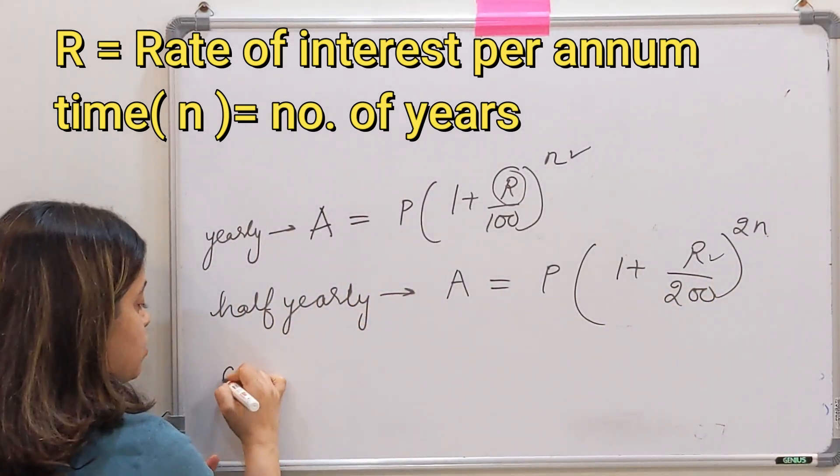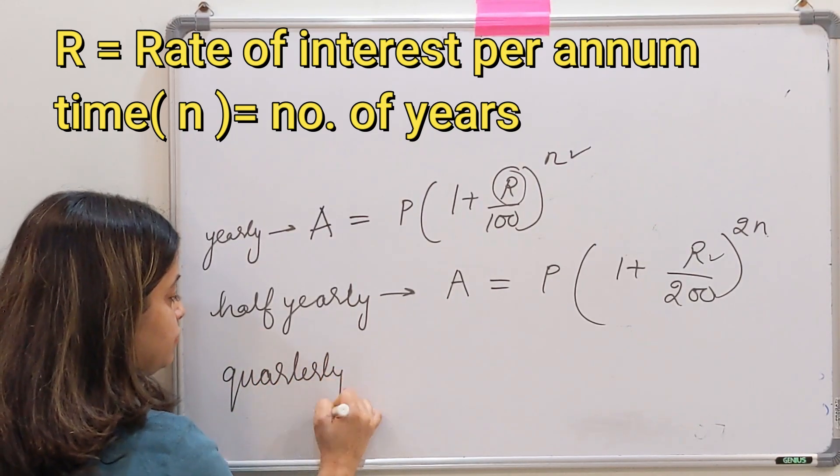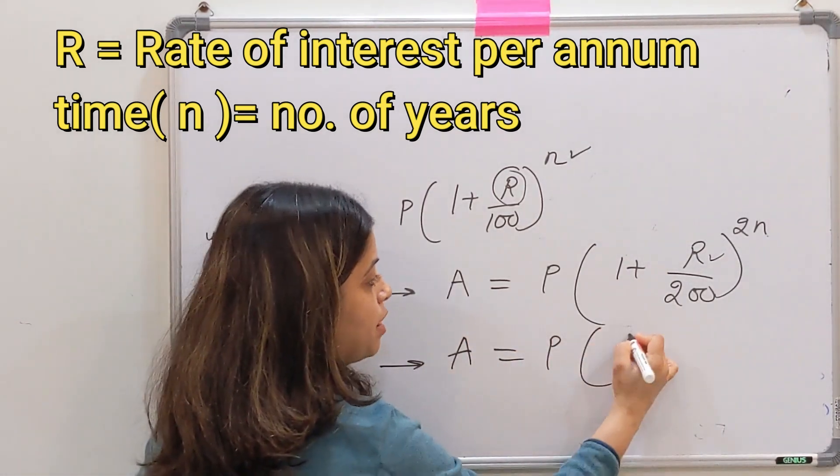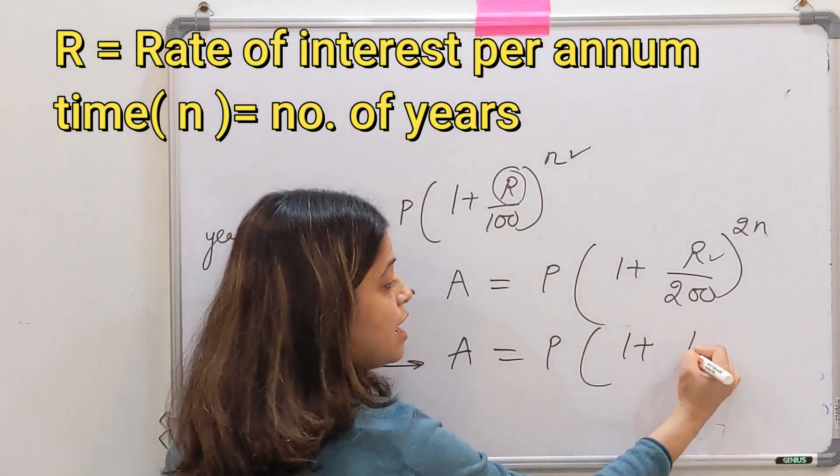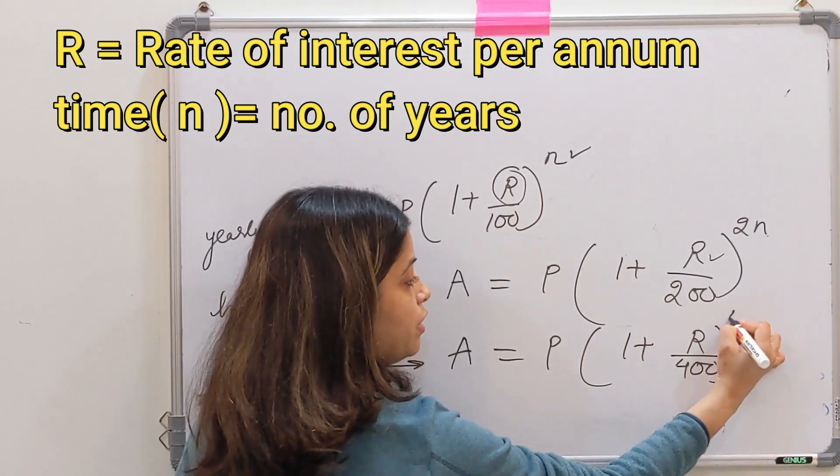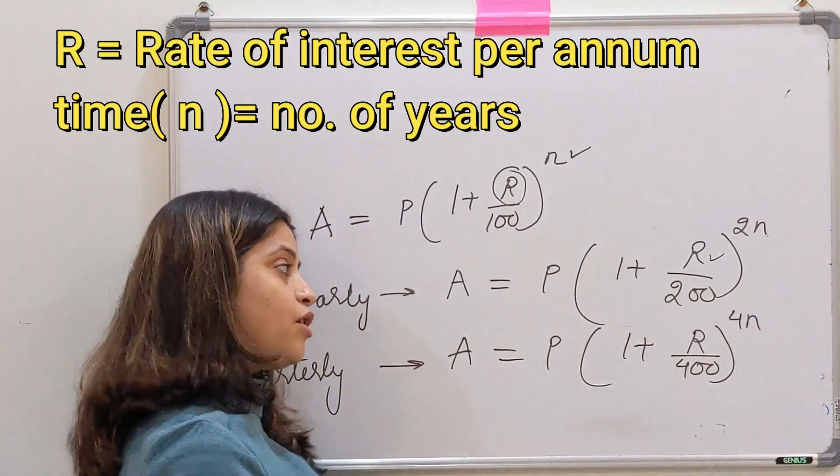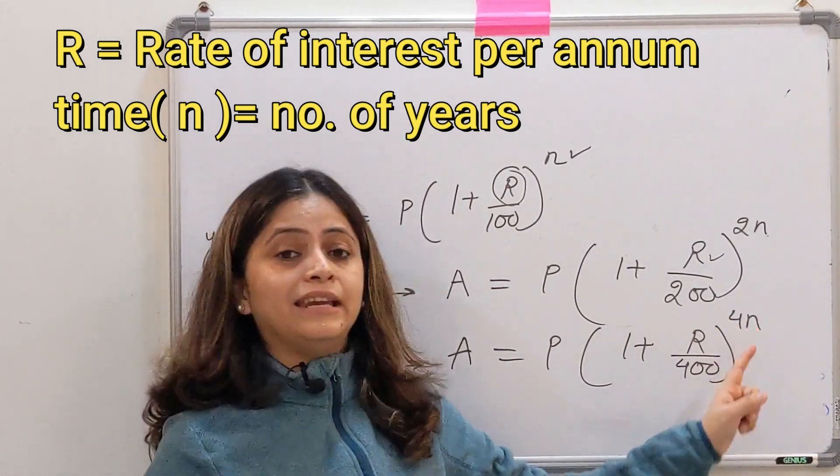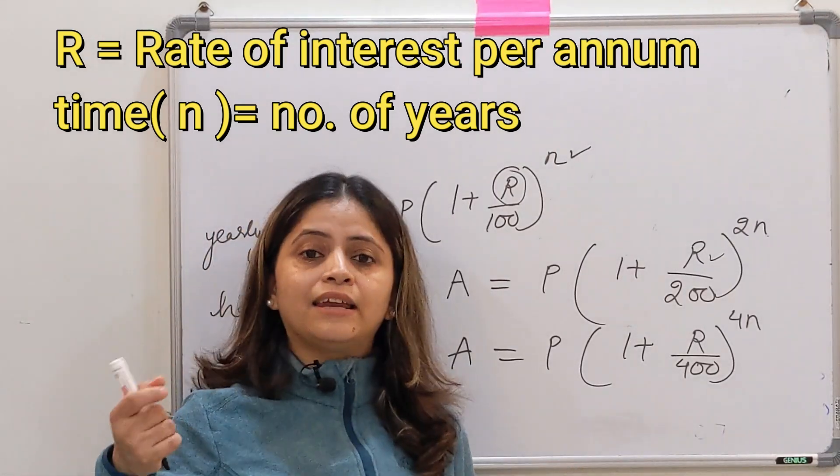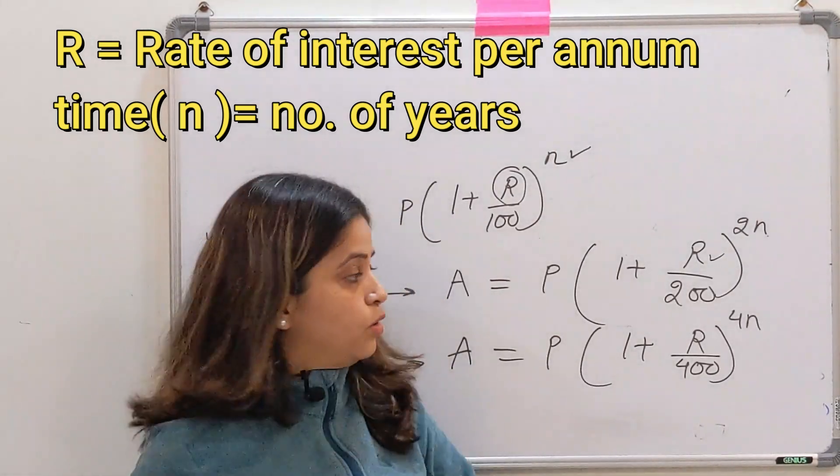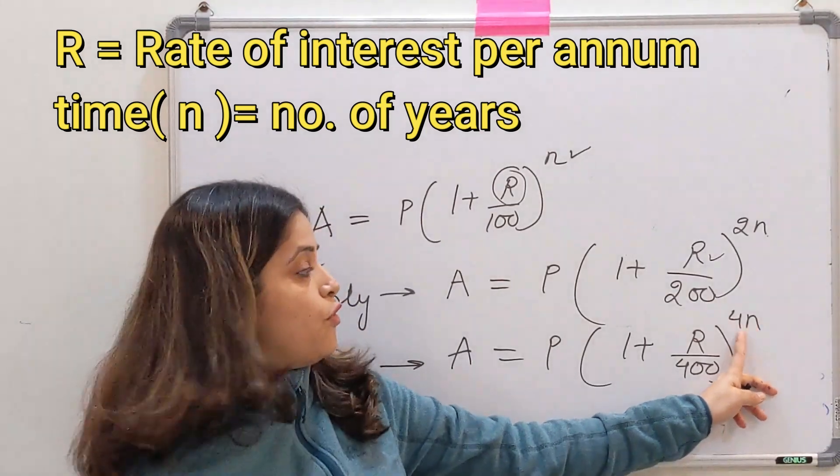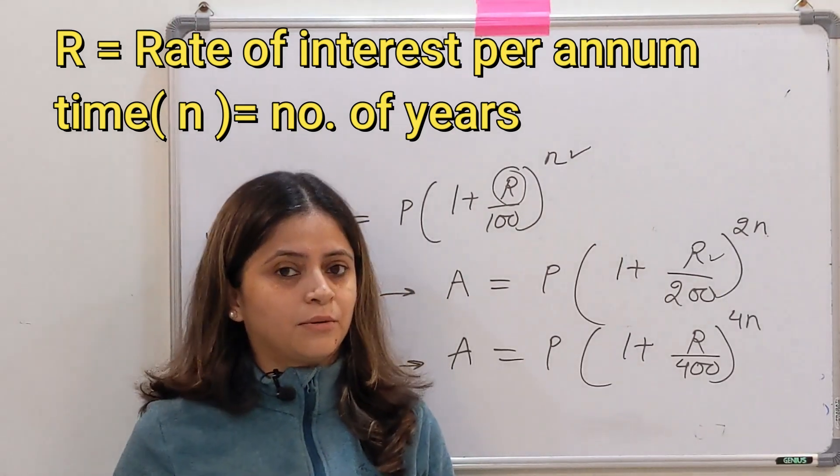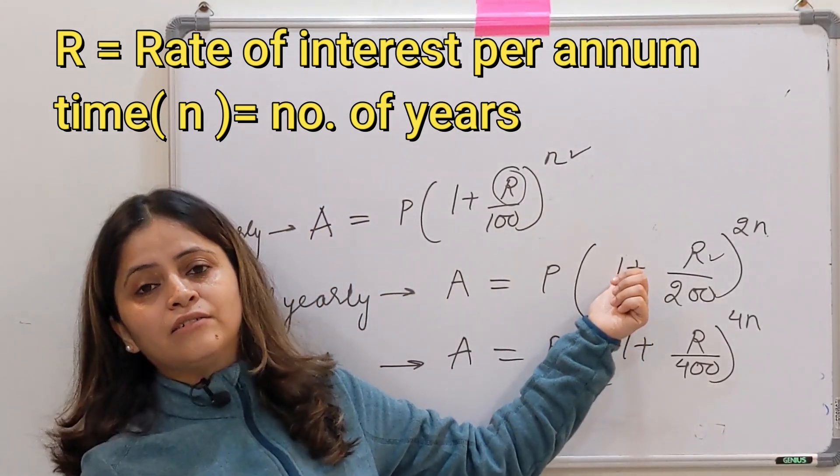Now when the interest is calculated quarterly, when interest is compounded quarterly, that case हमारा amount का formula बन जाता है P into 1 plus R upon 400 power 4n. Here also आपका R and n same है. R is the rate of interest per annum and n is also number of years. अगर n आपका months में है तो please उसको years में convert कर दो. यहां पे n की value डाल दो. 4 is already given. ये 3 formulas very easy. और अब हमें जो question करूंगी, here we will be using the second formula where the interest is compounded half-yearly.